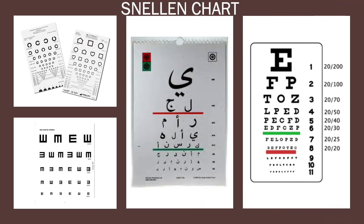When identifying visual impairments, we return to the Snellen chart. There are different forms of the Snellen chart depending on the age of the child or their language. There can also be several other varieties of this chart, and along with the chart there are other tests that can check for eye diseases or other types of visual impairments.